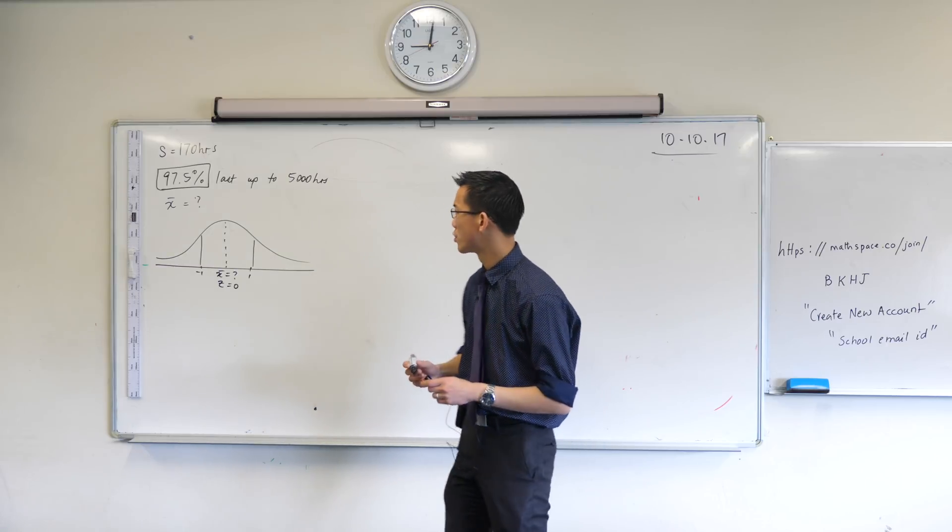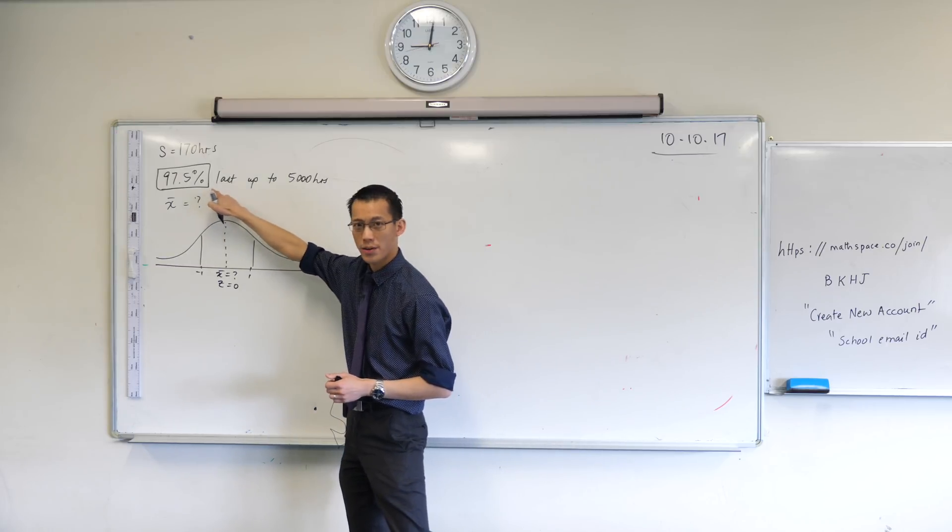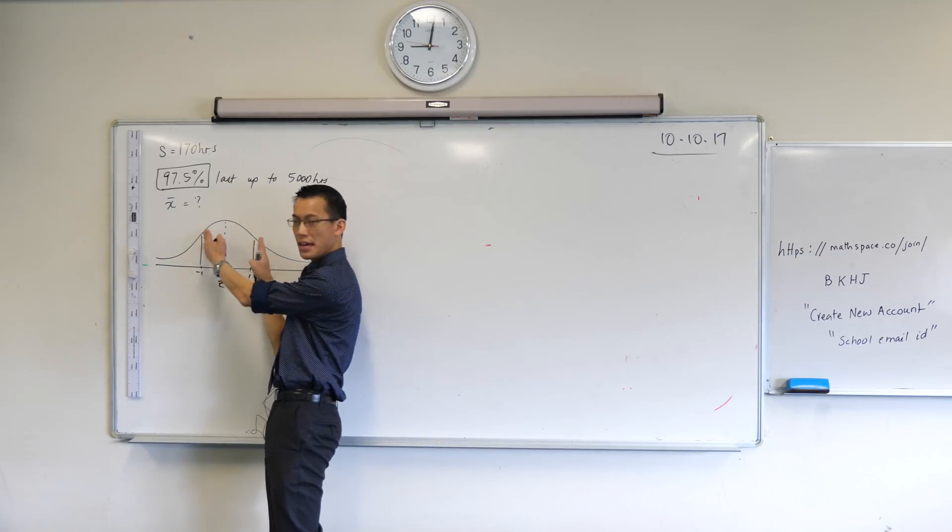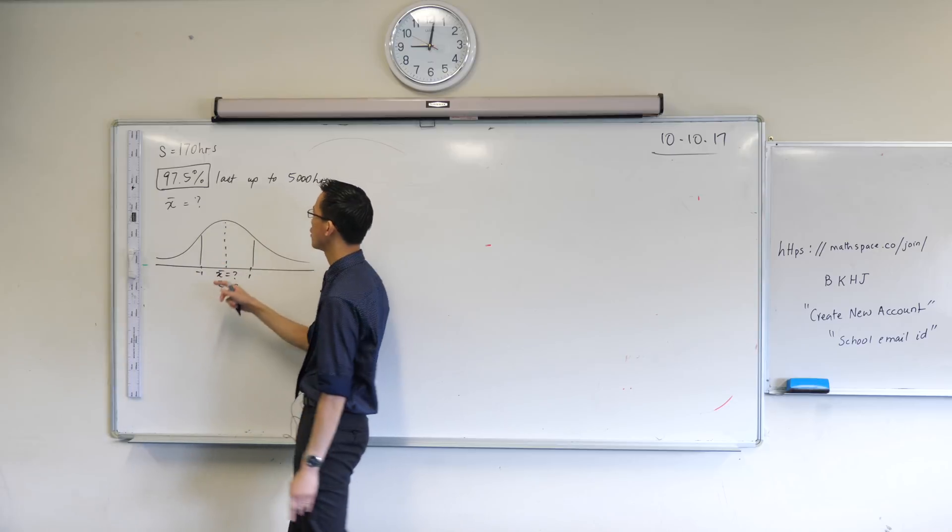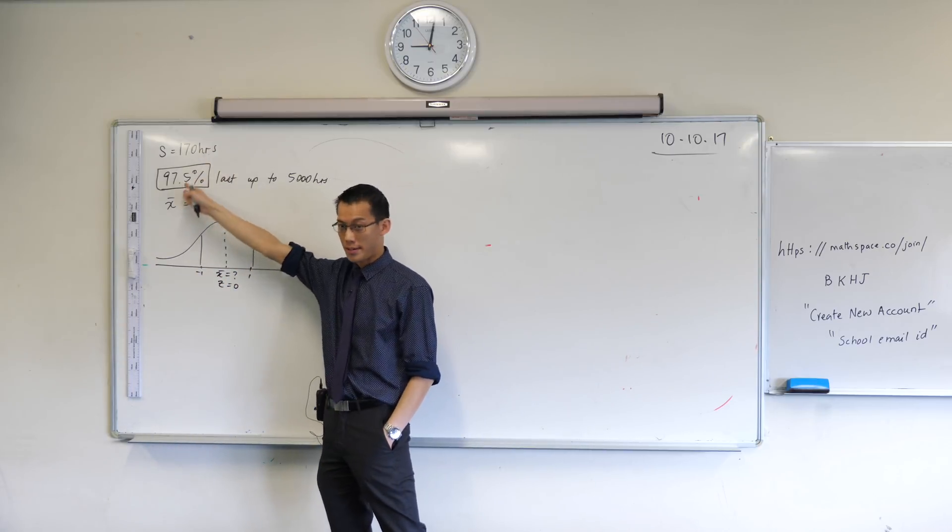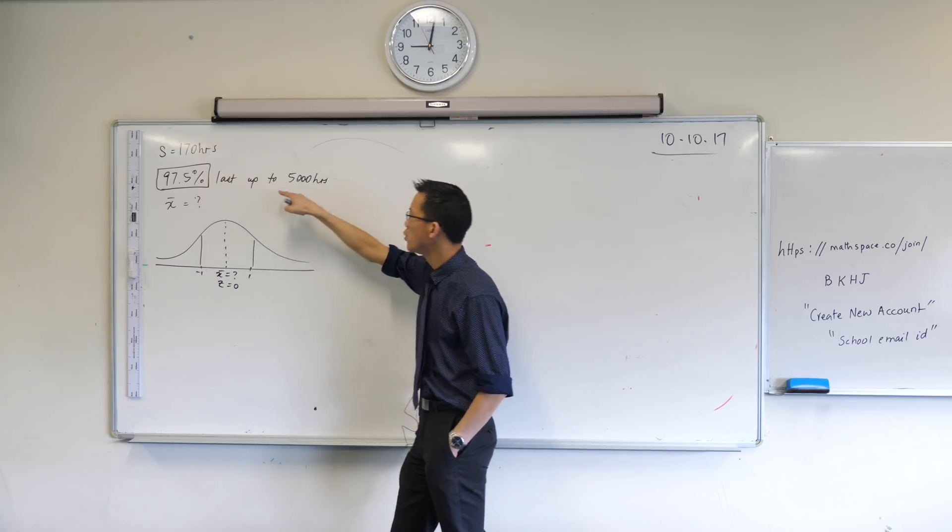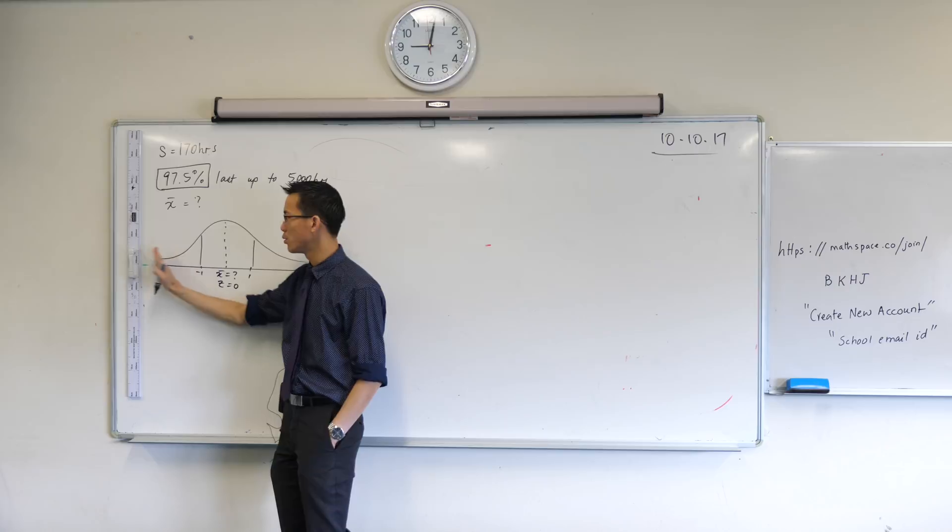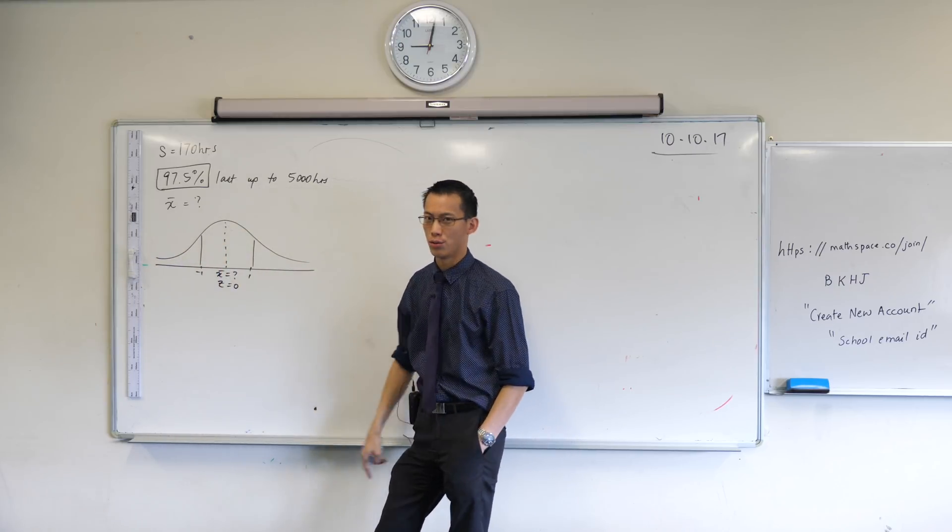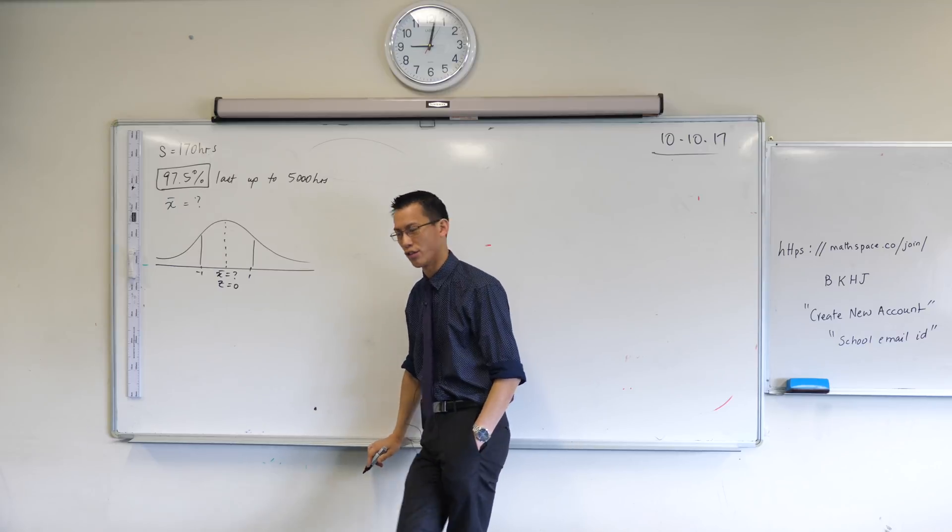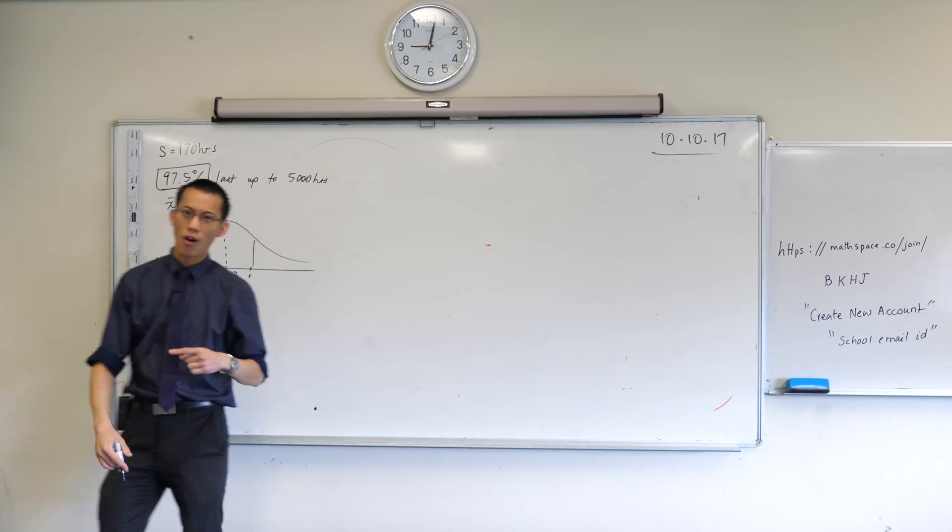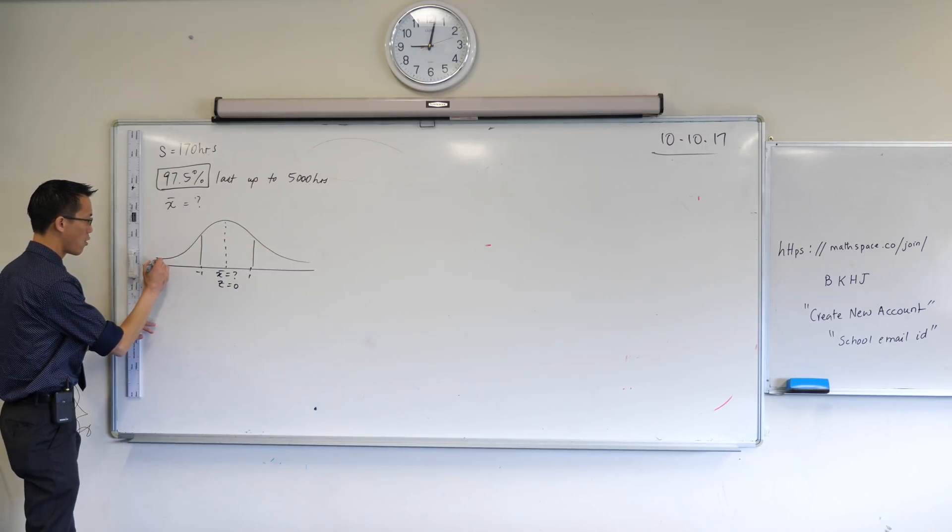Now, 68% is clearly too small for the actual figure we're interested in here, but keep in mind, 68% is just inside here within one standard deviation. This wording says that whatever percentage lasts up to 5,000 hours also includes all of these down here. Up to 5,000 hours includes some dud of a light globe that lasts like three hours. So I also need to include everyone over here.